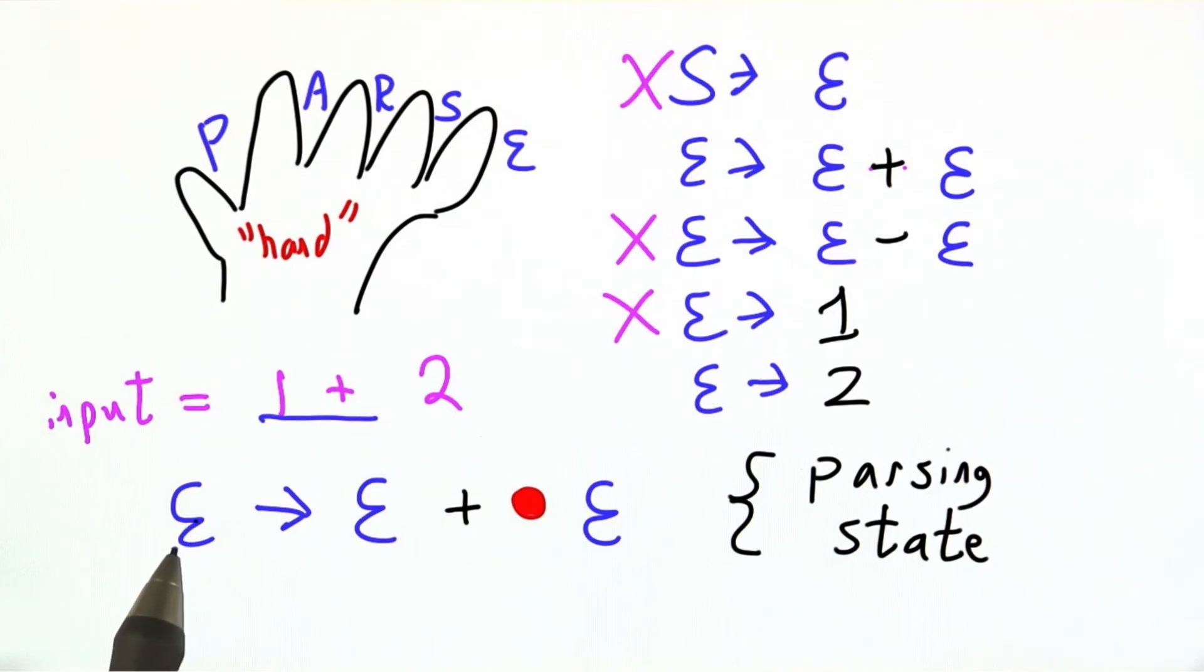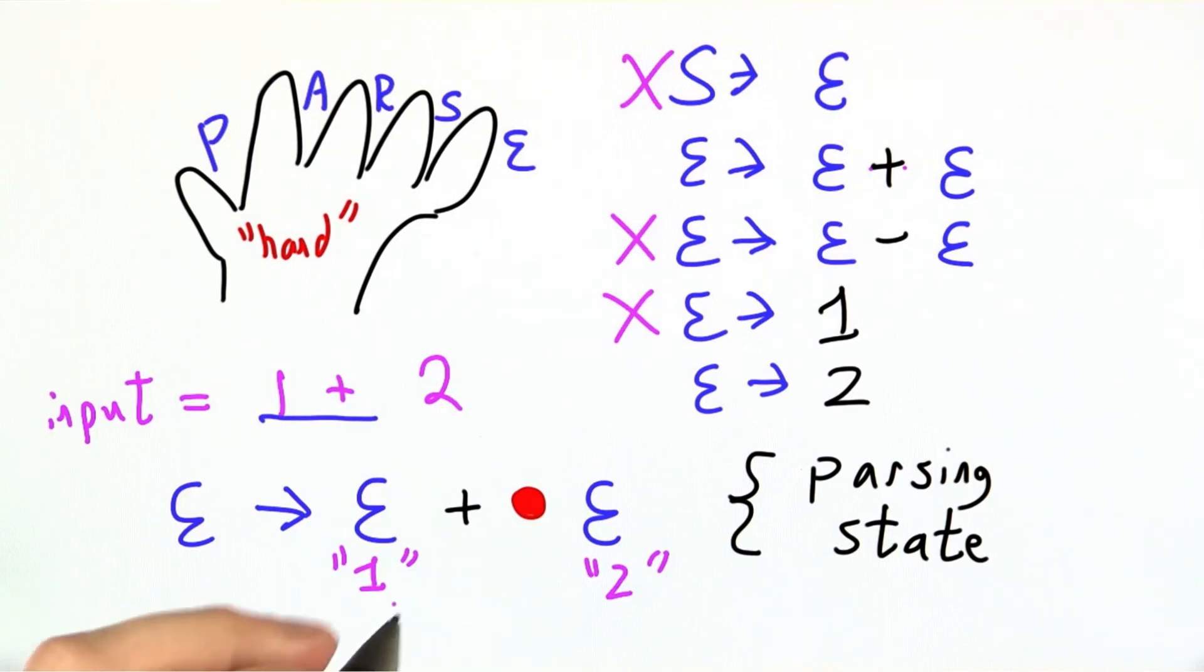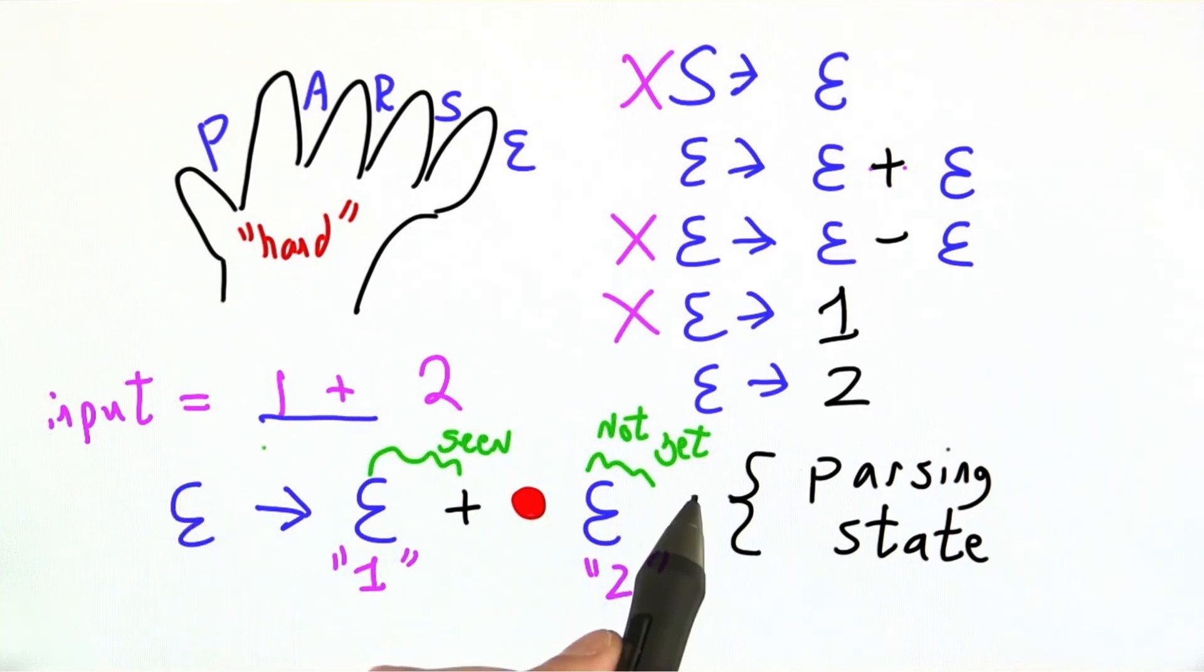This is one example of a parsing state. The first e is going to correspond to or come from the one in the input. Ideally, the second e will match up with the two in the input. We've already seen everything to the left of the red dot. We have not yet seen everything to the right of the red dot. The red dot is right where we are now. This is the past. This is the future.